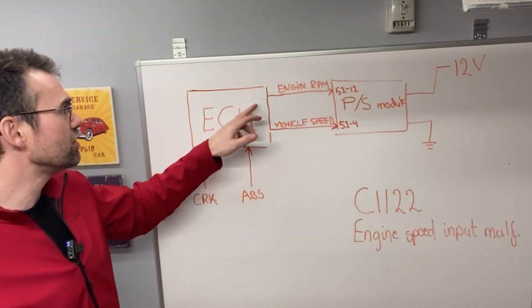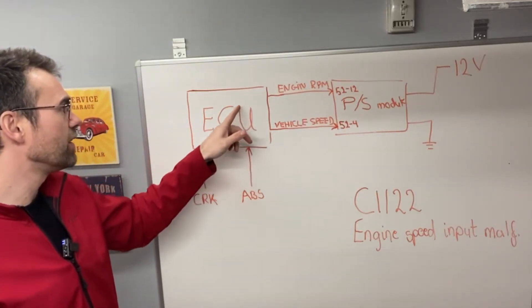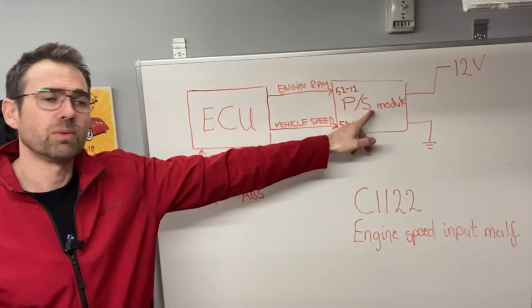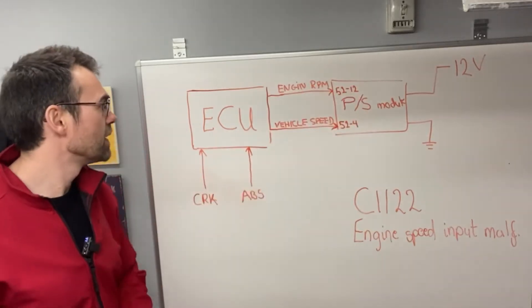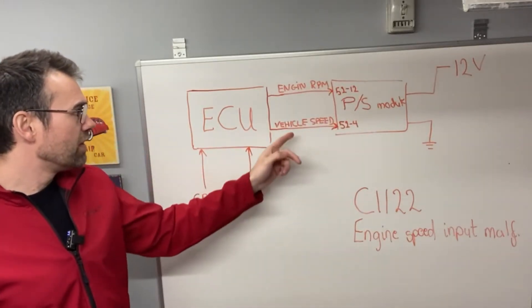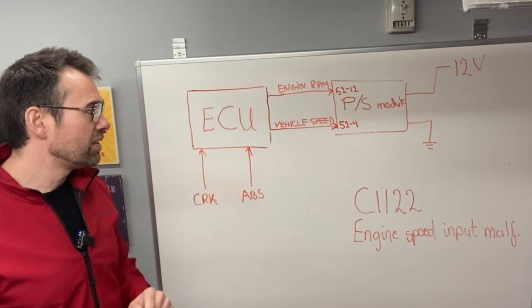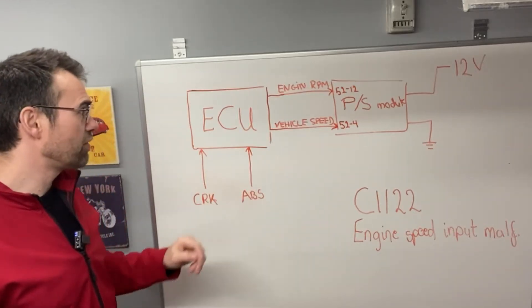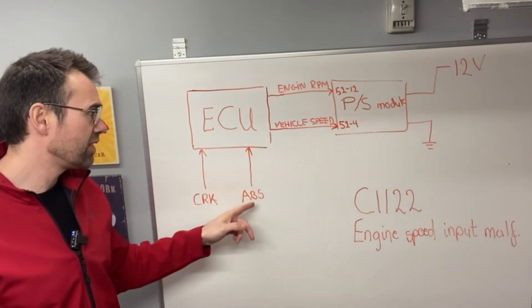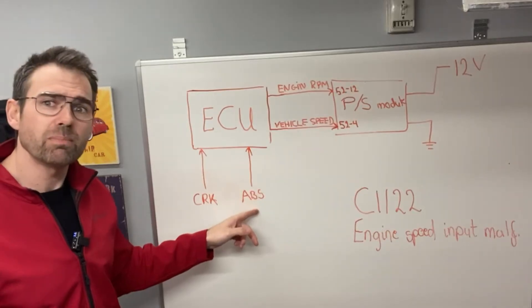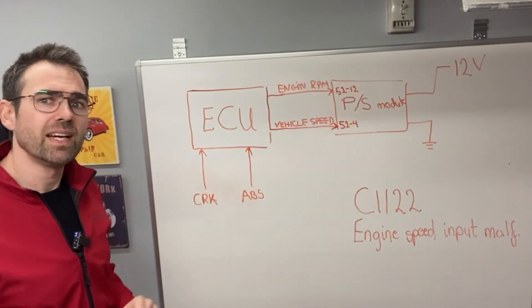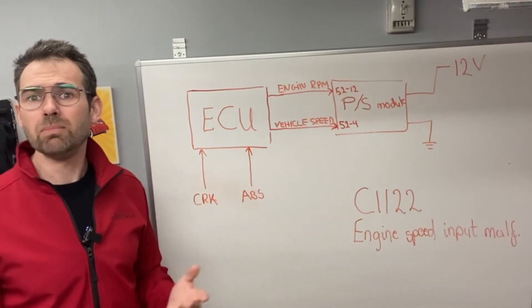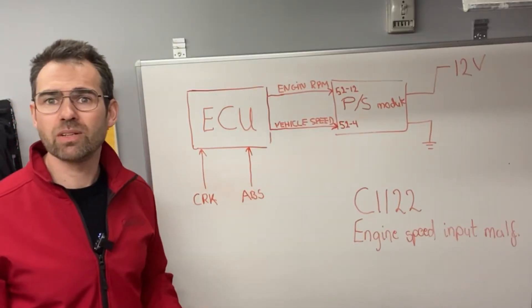It just needs to be transmitted from the ECU to the power steering control module. We also have the vehicle speed input, and that's coming from the ECU, given by the ABS sensor. Well, I don't see any ABS lights coming on.